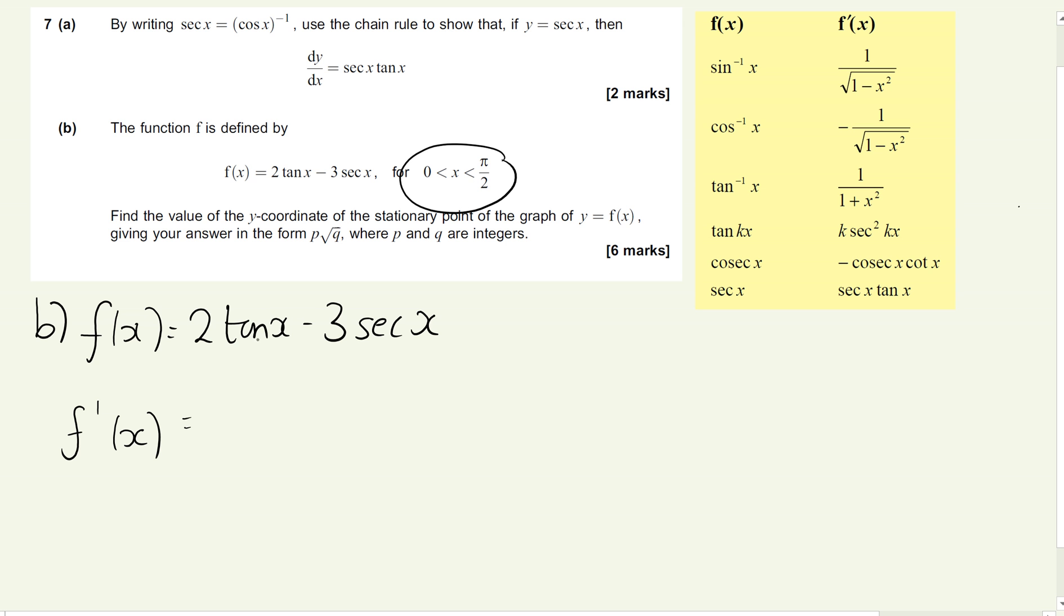So I'm differentiating tan x. So we can see that tan x goes to sec x. So it's going to be 2, sorry, sec squared x there. And we can see that sec x goes to sec x tan x. So we're going to have 3 sec x tan x. So that's my first step, which is to differentiate both functions. Now you might notice, or you should notice, that there is a common factor in here. Both terms have a sec term in them. So I'm going to take the sec out as a common factor. So it's going to be 2 sec x minus 3 tan x.